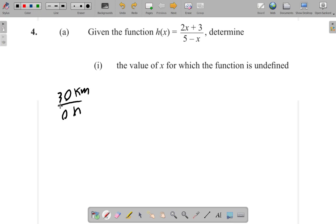It's impossible to travel any distance in zero time. Saying that you travel 30 kilometers in zero time is an undefined function. You can travel zero kilometers in five hours if you just sit down or you're sleeping.